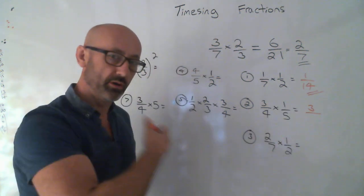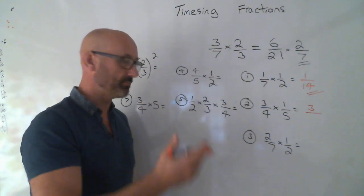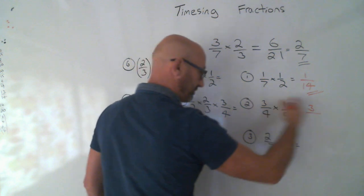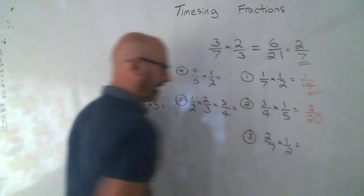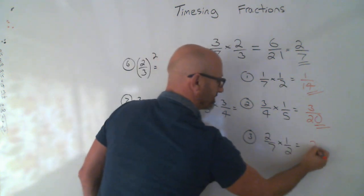Again, 3 times 1. People often go 3 times 1 and they add them rather than times them. 3 times 1 is 1, 3 times 1 is 3. 4 fives is 20. 2 ones is 2.